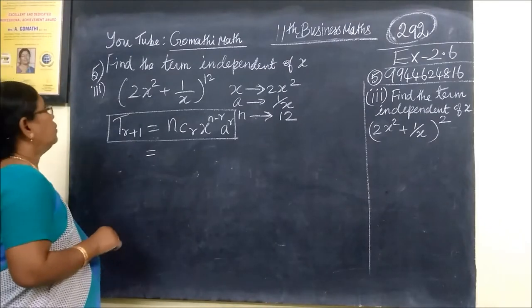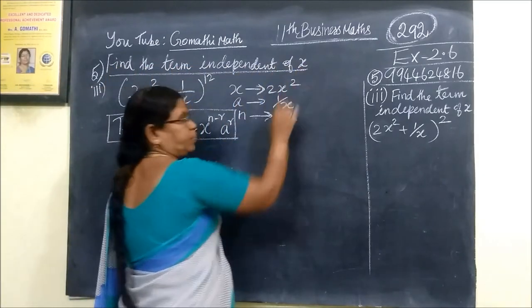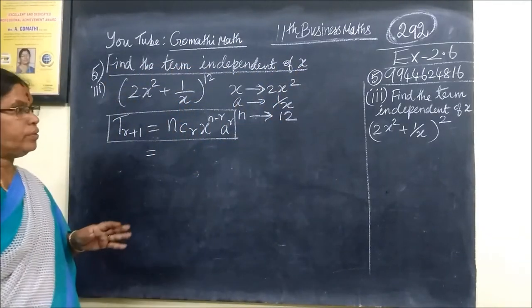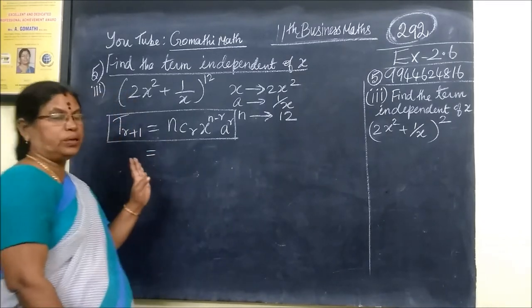So now question number 5 and part 1. We are finding the term independent of x. So we are saying the term independent of x means no x term at all. The x term has to go.